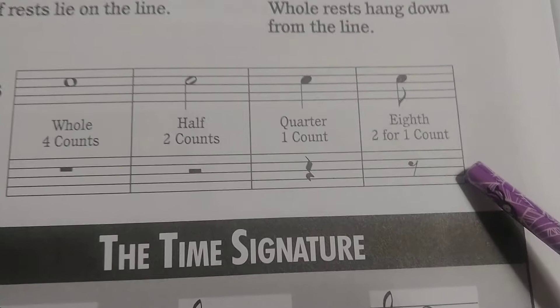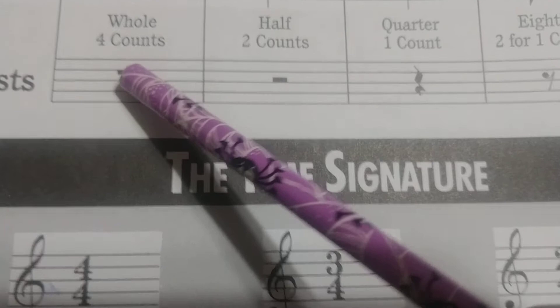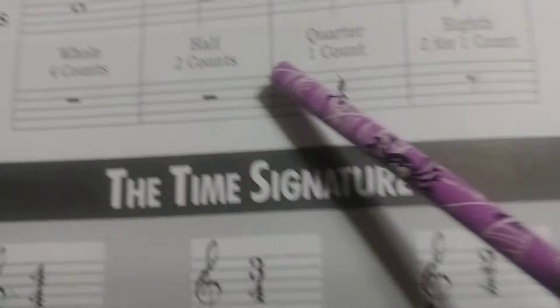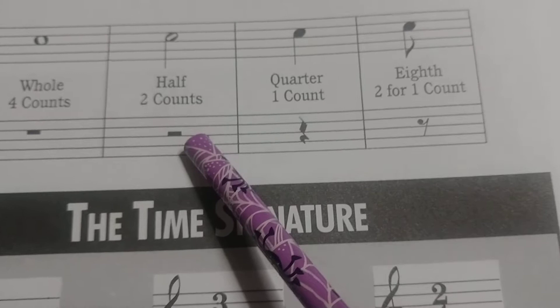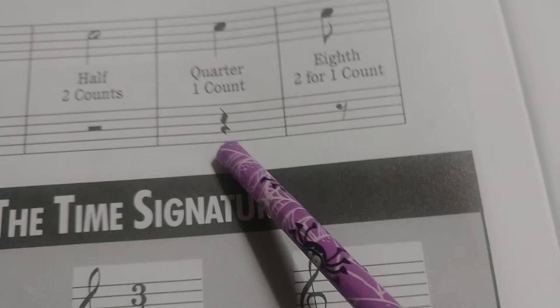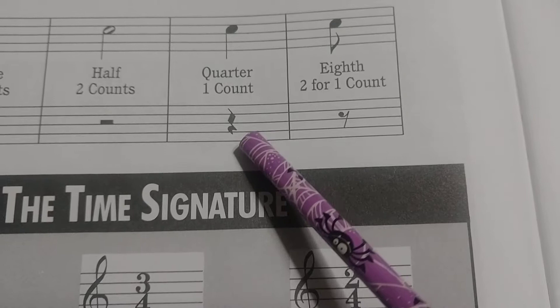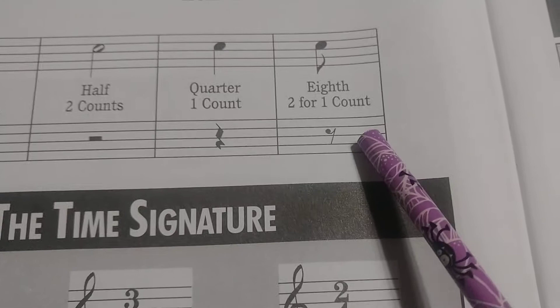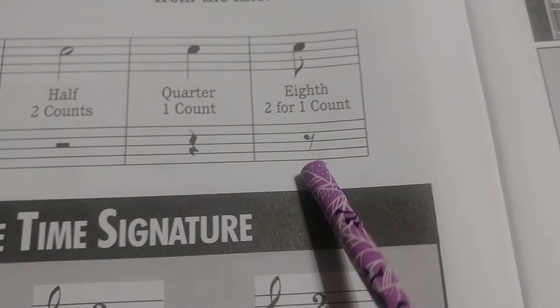Our whole rest is basically a thick bar coming down from the top of the line, representing four beats of silence. Our half rest is a thick bar coming up from the bottom of the line, equal to two beats of silence. Our quarter rest looks nothing like those two — it's a slanted squiggly line, kind of like a sideways Z with a little C on the end, worth one beat of silence. Our eighth rest, just like our eighth note, is worth half a beat, and looks like a sideways comma with a line coming down.